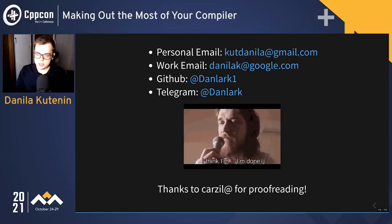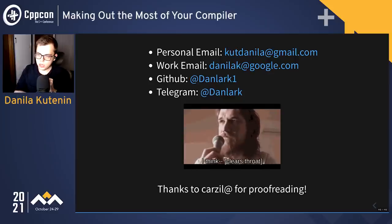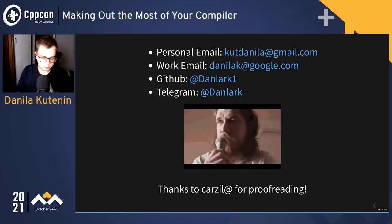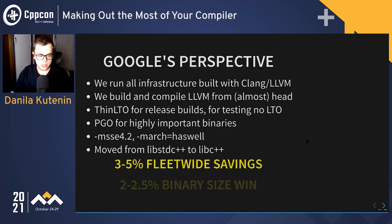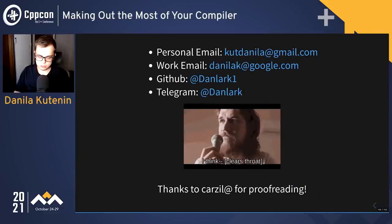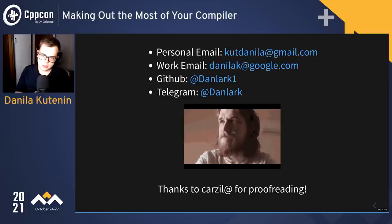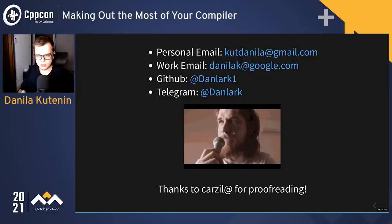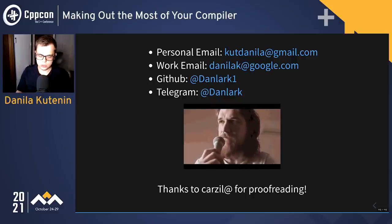Q&A: Is -Waggressive-loop-optimizations the same as loop optimization from GCC 12? What can we use to enable loop optimizations pre-GCC 12? Use -O3, or there are some specific options I have linked in my slides. When an option starts with -W it's a warning, so I might be mistaken about what that flag does exactly — the answer is to look into the code and adjust the specific options.